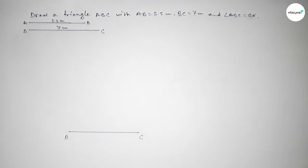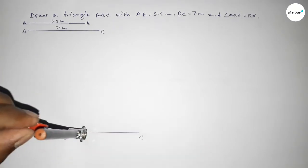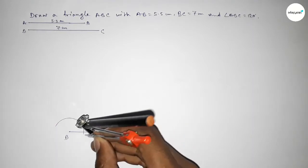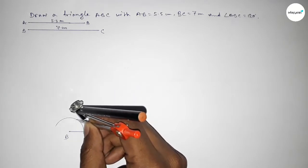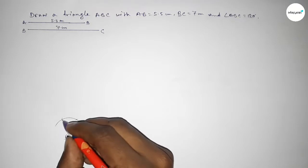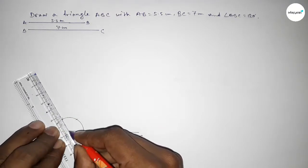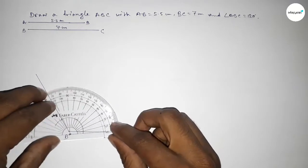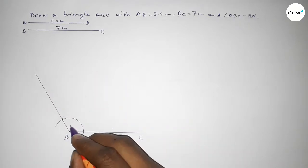Now we have to draw a 120 degree angle at point B. Putting the compass on point B and taking any length, draw an arc. With the same length, place the compass at that arc and cut another arc, then cut once more. Both curves intersect at a point — joining this line gives us a 120 degree angle. Checking this angle — it is perfectly 120 degrees.